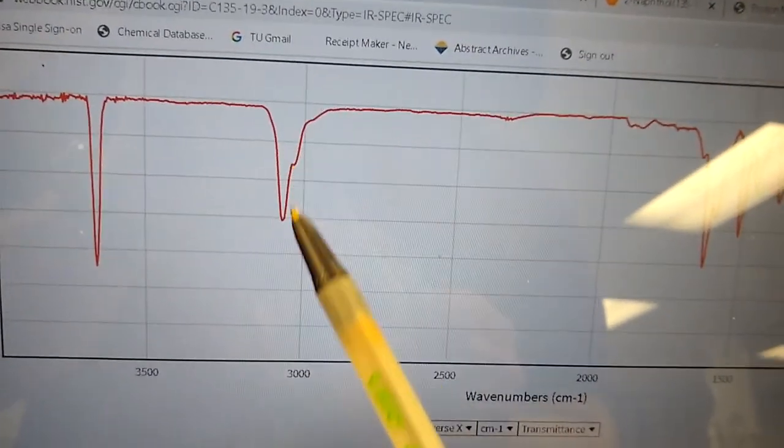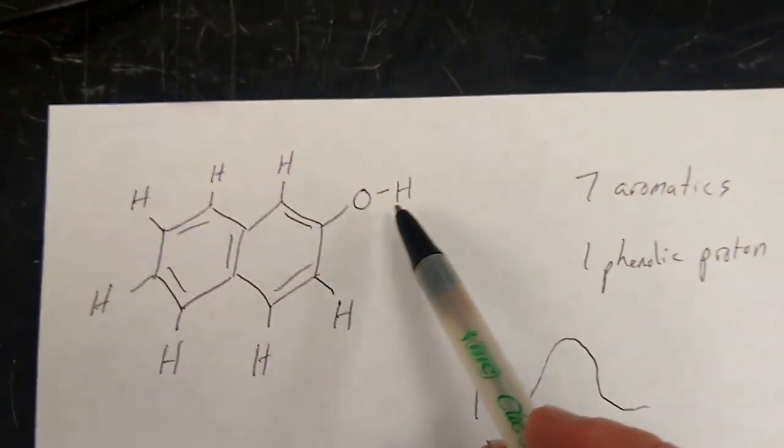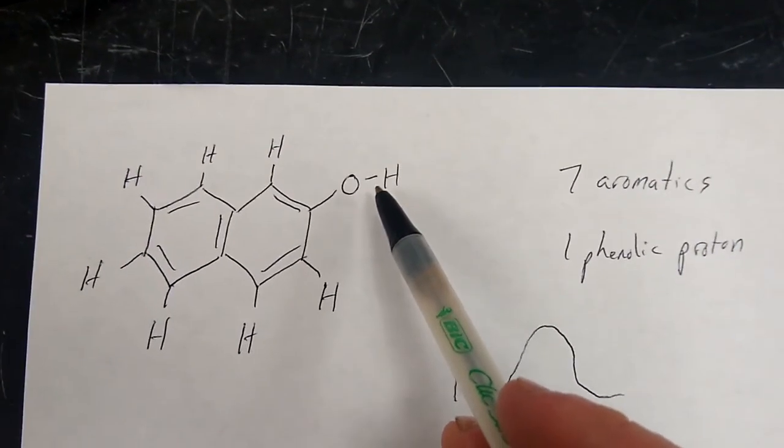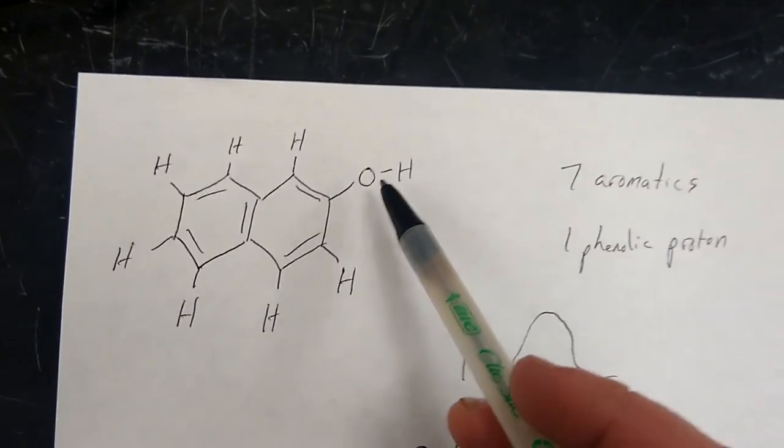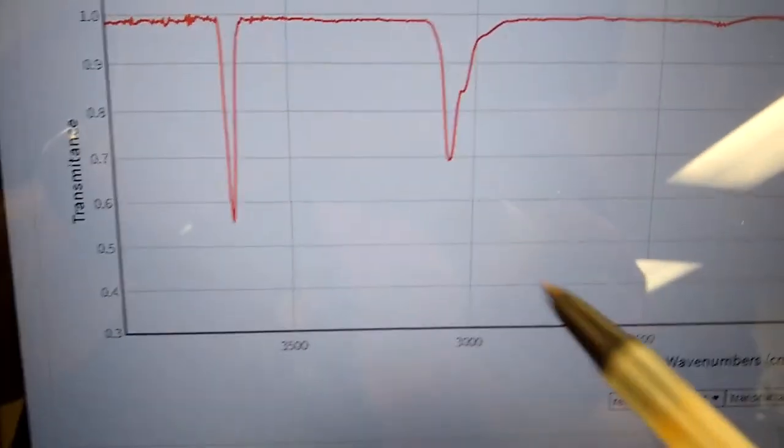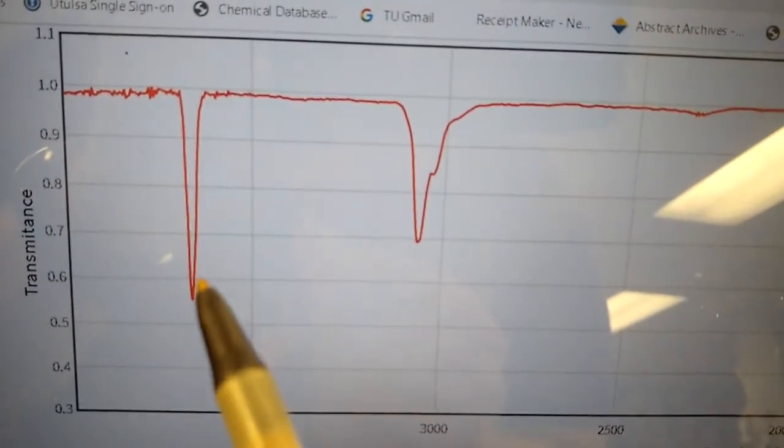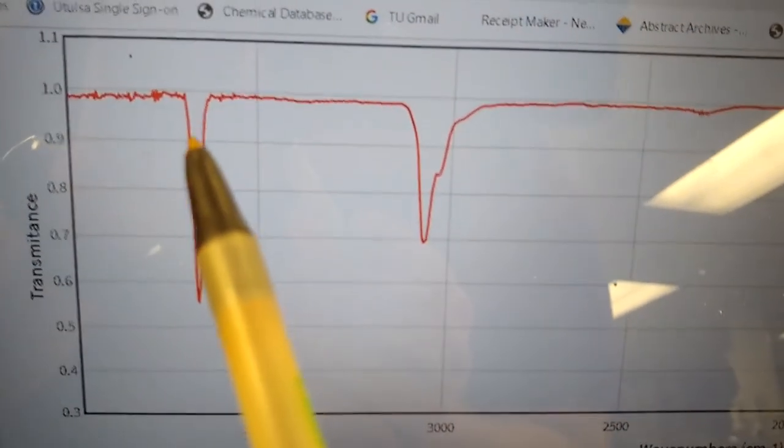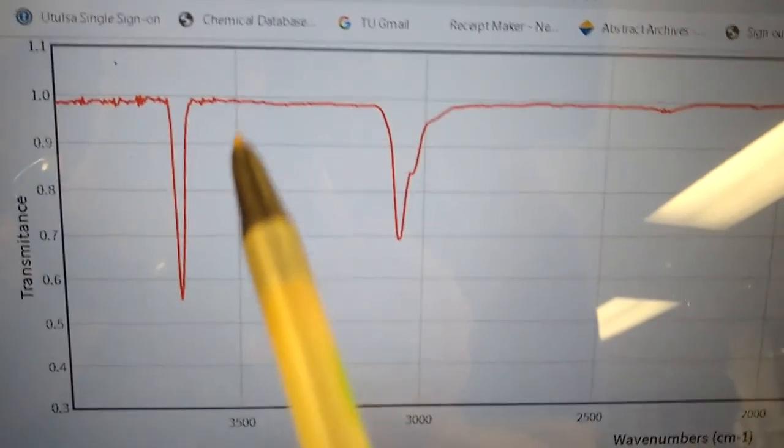If you look at a spectrum of two-naphthol, you'll see right there you've got a signal. And your OH from the phenolic portion, that's usually above 3200 or so. And if you look at the spectrum here at 3700, you see a big sharp signal for the OH stretch. Usually when you see it, it'll be a lot broader than that. That can be concentration related a lot of times.